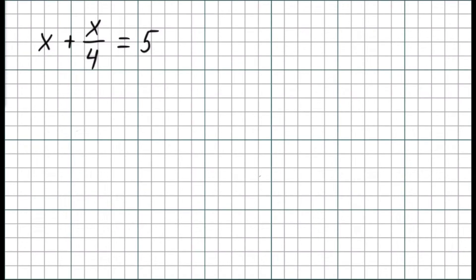First we need to multiply each component of the equation by 4 in order to get rid of this denominator. x times 4 is 4x plus x over 4 times 4 is x equals 5 times 4 is 20.